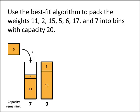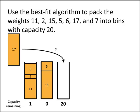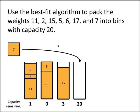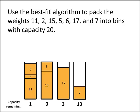Our next weight has size 6 — there's only one bin it could go into, so we put it into the first bin. Our next weight has size 17 — that doesn't fit into any of the first two bins, so we create a new bin for it. Finally, our last weight has size 7 — that doesn't fit into any of the bins we have so far, so we create another new bin and place it there. This is the result of using the best fit algorithm to pack the same weights into bins with capacity 20, and notice that we get a different result from using this different algorithm.